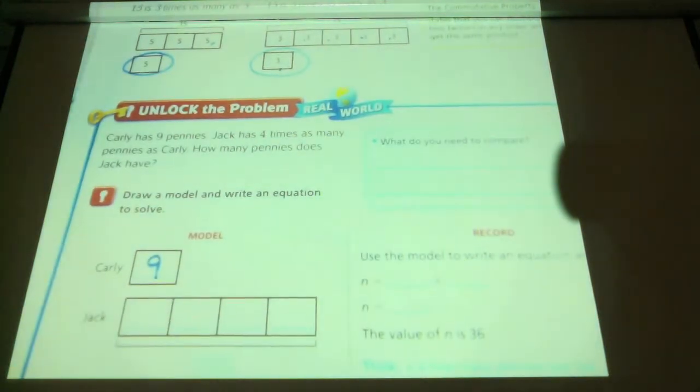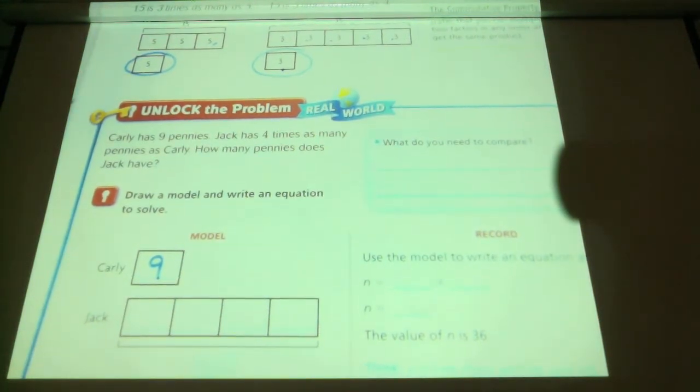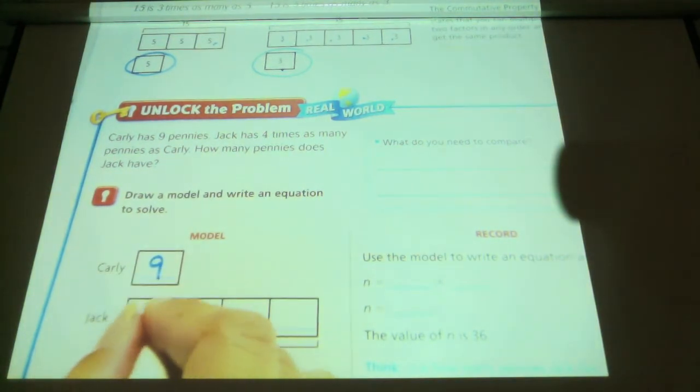And Jack has 4 times as many. So what do you think I'm going to put in all 4 of these boxes? Raise your quiet hand. What do you think, Darian? 9's.